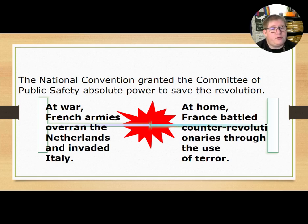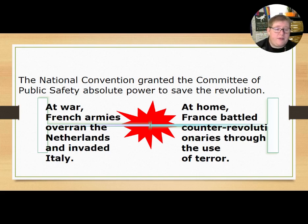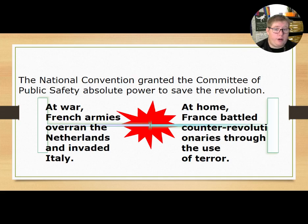The National Convention granted the Committee of Public Safety absolute power to save the revolution. At war, French armies overran the Netherlands and invaded Italy. At home, France battled counter-revolutionaries through the use of terror. This marks the beginning of the period known as the Reign of Terror.